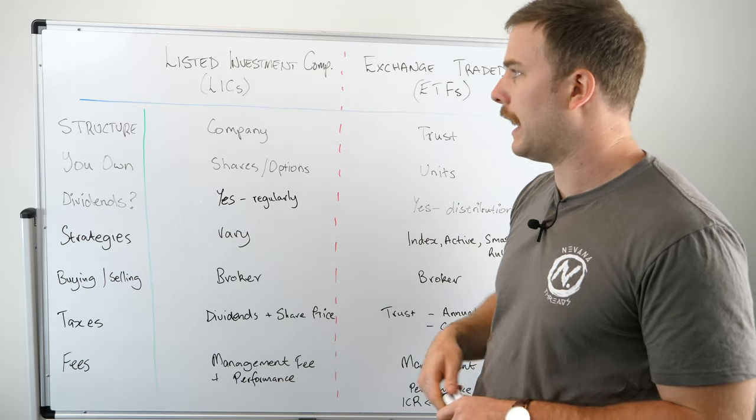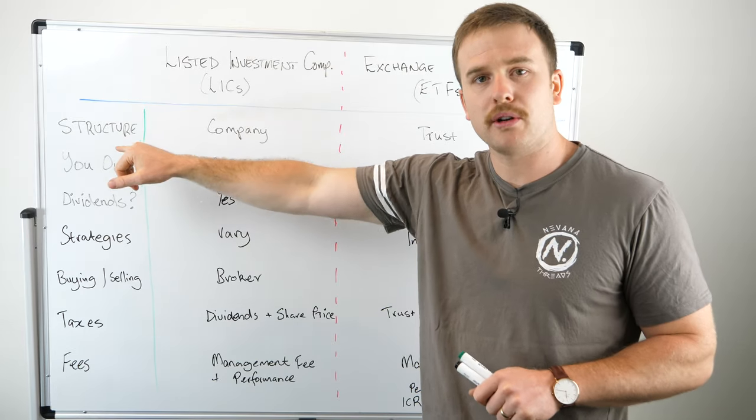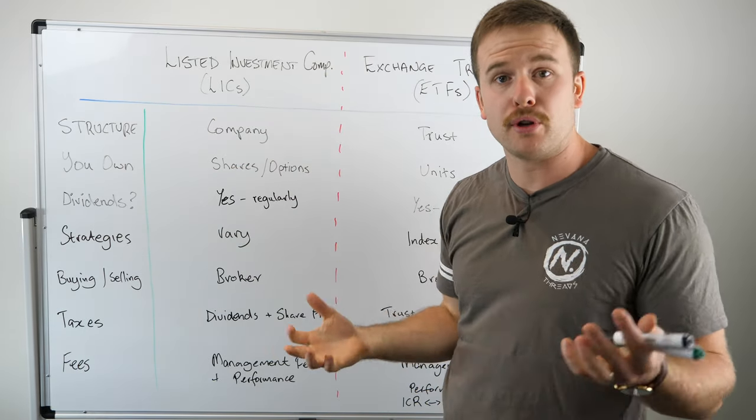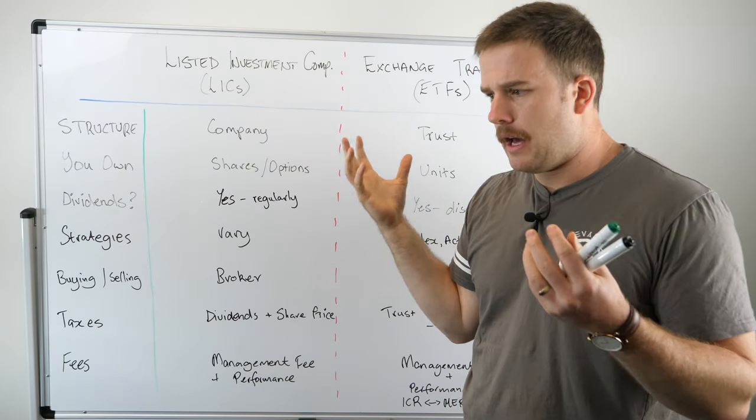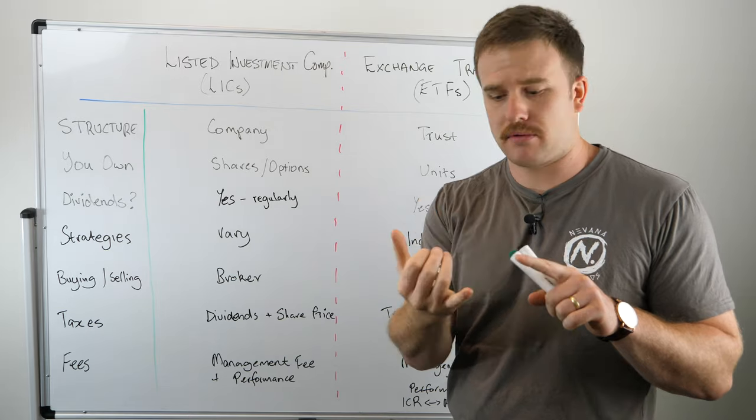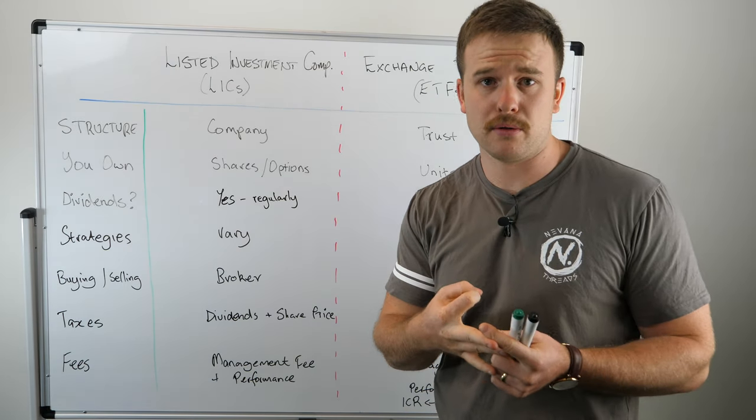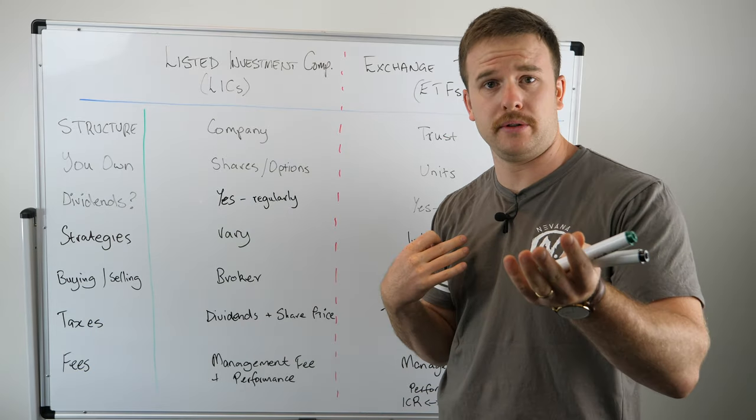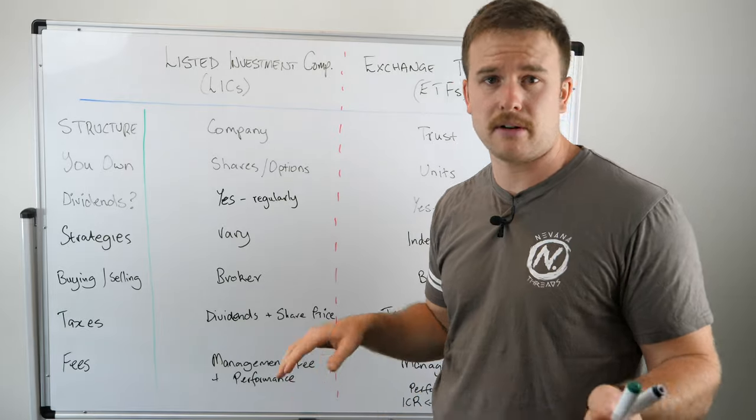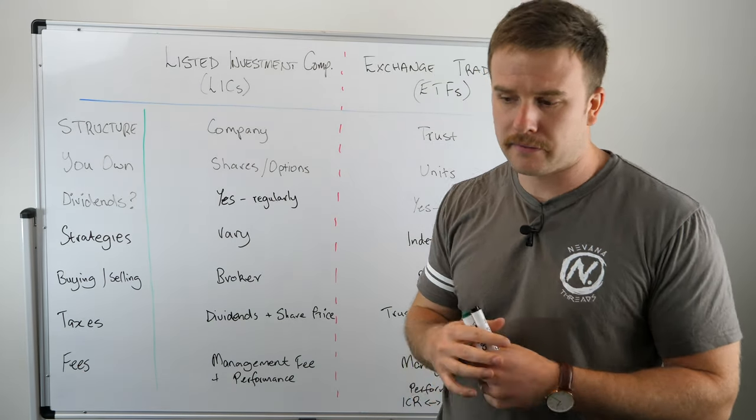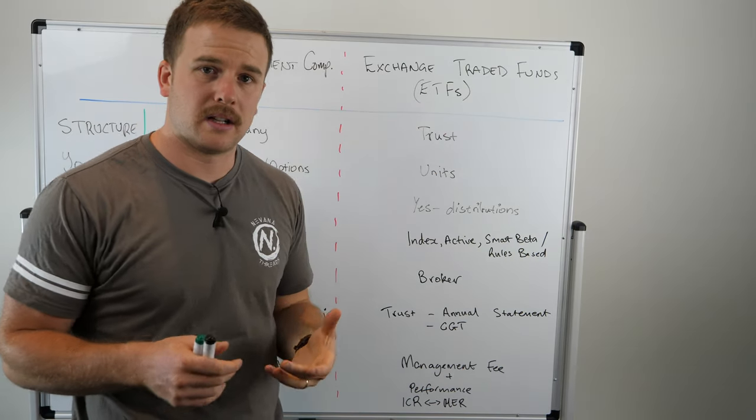The differences are, as the name suggests, a listed investment company. The structure, what you're actually investing in, is a company structure. For those who don't know about tax or some of the legal stuff around that, a company can file its own tax returns, it has a board of directors, it can make investments in its own name. A board and a company can do that itself.